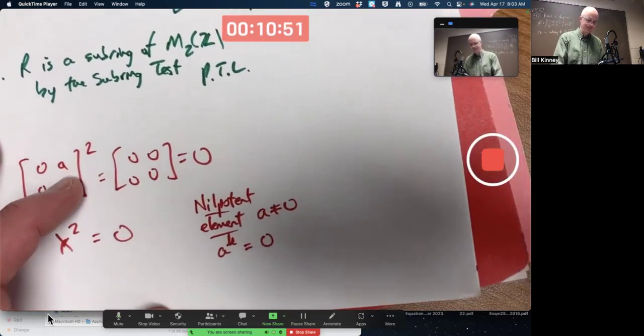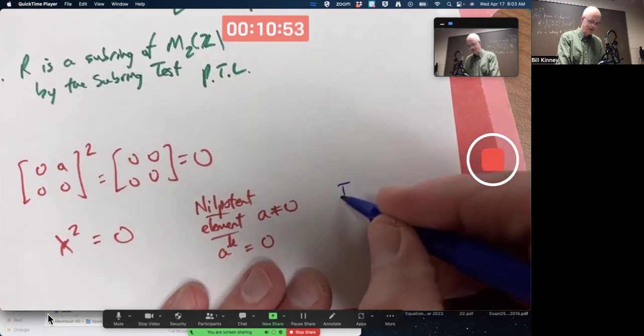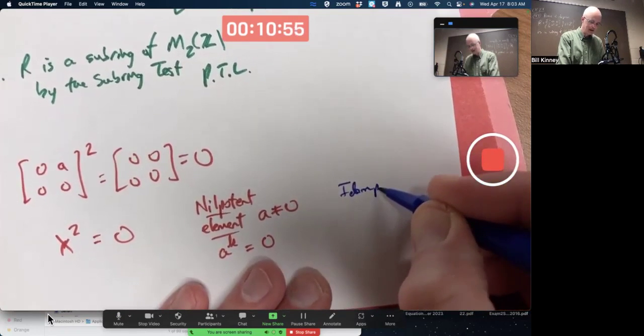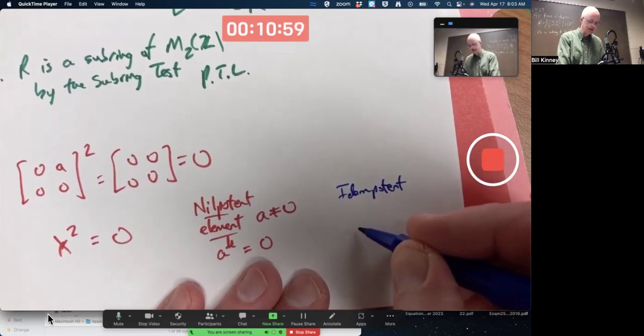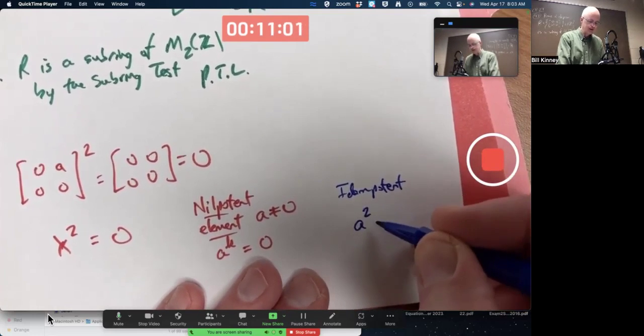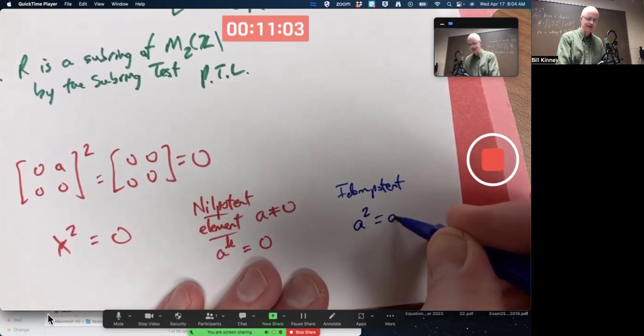Idempotent elements are elements typically taken to be non-zero elements, such that when you square them, you get themselves.